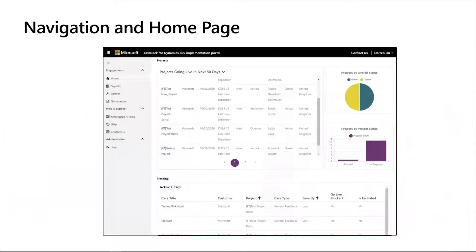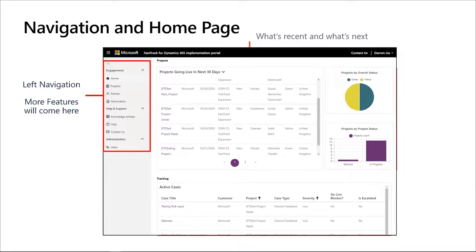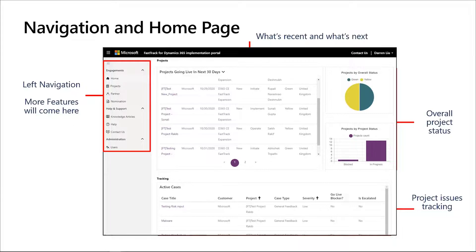We have explained the different portal experiences and how to access them. Now we're going to see how those experiences materialize directly in the portal with some core features. The homepage that you are going to see when you connect to the portal will depend on the security role assigned to your user — it can be a project lead or a project team member. Even though the portal is in the first phases of innovation, it already provides features that facilitate the interaction with FastTrack. As we keep progressing during the next months, you are going to start to observe new capabilities in guided experience, collaboration, and intelligence.